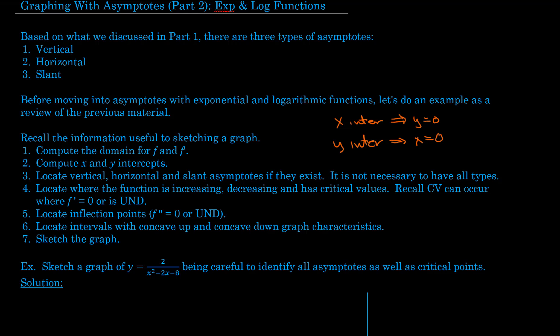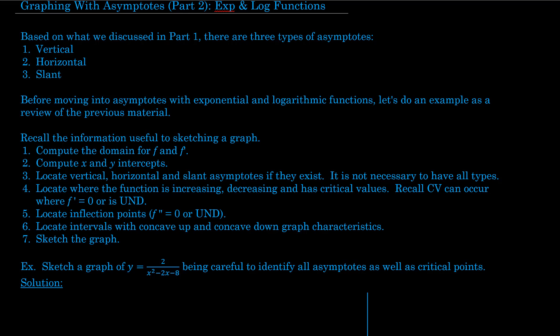It's not necessary to have all types of asymptotes — in some cases you won't have any of them. For example, it's possible that a function can have no asymptotes at all. Next, determine on what intervals the function is increasing or decreasing, and locate the critical values. Critical values can occur where the derivative is 0 or undefined, though that doesn't necessarily mean it is a max or min.